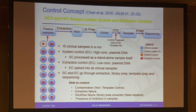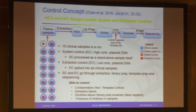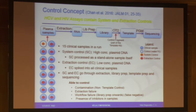We also have an extraction control — a low concentration plasmid DNA, also called a sensitivity control — spiked into all the samples so you have full control over the whole process. Both controls go through the whole extraction, library prep, template preparation, and sequencing. By this approach we are able to control contamination by the non-template control, extraction failure, workflow failure from library prep onwards, false negatives, and also the presence of inhibitors. All these experiments are described in detail in the cited paper.